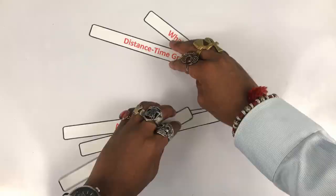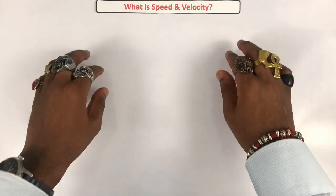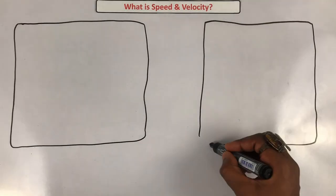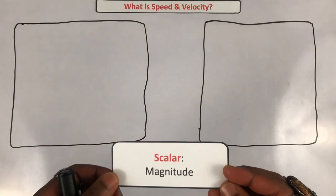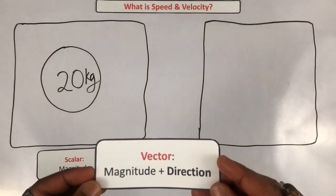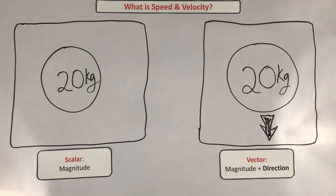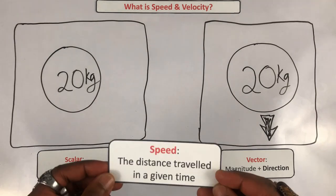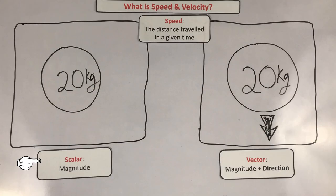You may remember from the previous video that scalar quantities have a magnitude, and vector quantities have a magnitude and a direction. This distinction helps us understand the difference between speed and velocity. Speed doesn't involve a direction, therefore it's a scalar quantity, and the units for speed are meters per second.